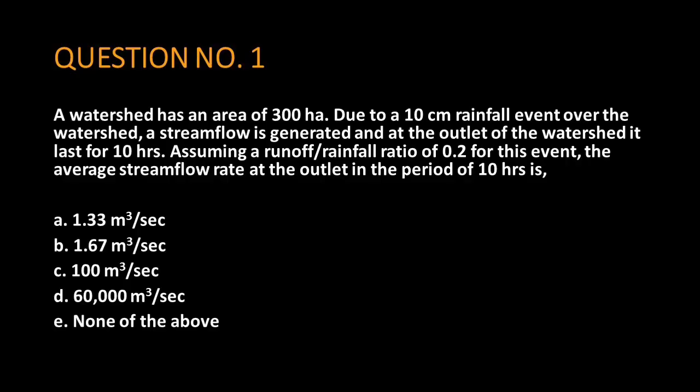Question number one. A watershed has an area of 300 hectares. Due to a 10 cm rainfall event over the watershed, a streamflow is generated and at the outlet of the watershed it lasts for 10 hours. Assuming a runoff-rainfall ratio of 0.2 for this event, the average streamflow rate at the outlet in the period of 10 hours is?